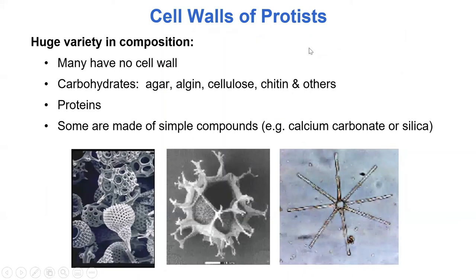Protists are a really diverse group of organisms — hard to group other than to say they're not plants, animals, or fungi. There's a huge variety in their cell wall compositions: some have no cell walls, some have cellulose like plants, some have chitin like fungi, some have proteins, and some of the more interesting ones actually have minerals such as calcium carbonate. The takeaway for protists: huge variety.